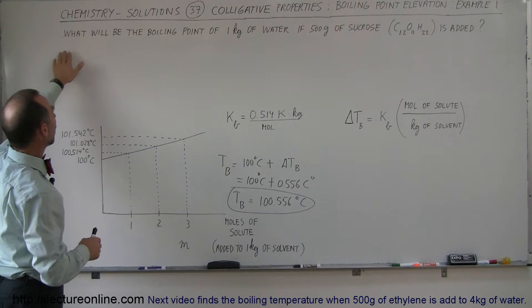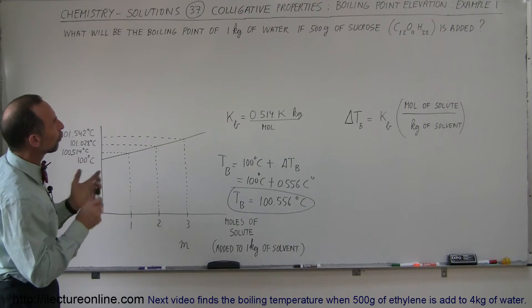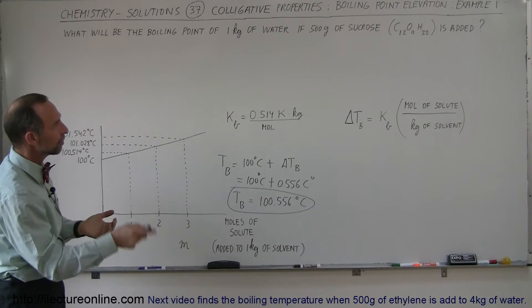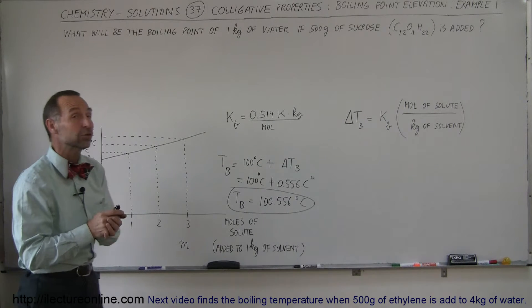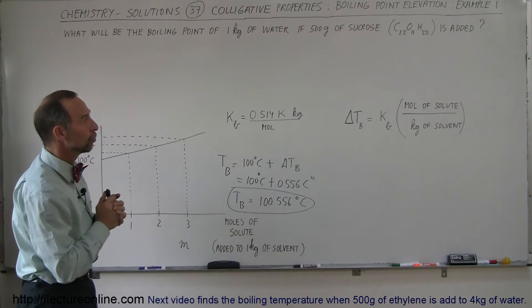So here the question says, what will be the boiling point of one kilogram of water if 500 grams of sucrose, which is C12H22O11, is added to it?